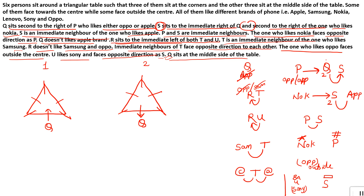Now we use the information about Q. In case one, Q's immediate right will be on this side. S sits to the immediate right of Q, so S is placed here. S is a neighbor of P, so P comes on the other side of S. We have used the first clue. Now from the other clue, S is an immediate neighbor of Apple, and S sits second to the right of the one who likes Nokia.